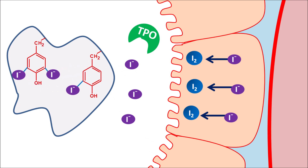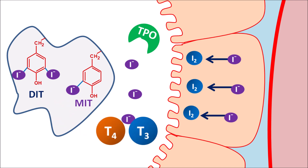This iodination produces two types of iodinated tyrosine residues: di-iodinated tyrosine (DIT) and mono-iodinated tyrosine (MIT). These residues are condensed to form thyroid hormones — two molecules of DIT condense to form T4, while one molecule of DIT and one molecule of MIT condense to form T3. Within the thyroglobulin, T3 and T4 are formed and released by proteolysis.